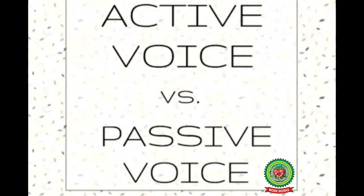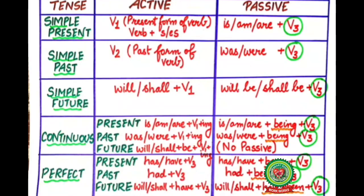Good morning students. Yesterday we had discussed active and passive voice for simple present and simple past tense. First we will revise the rules. If your active voice is given in simple present tense, that means your verb is having 's' or 'es', then in the passive voice you have to use helping verbs 'is' and 'are' followed by past participle. If your active voice is given in simple past tense, then we will use helping verbs 'was' or 'were' followed by past participle.